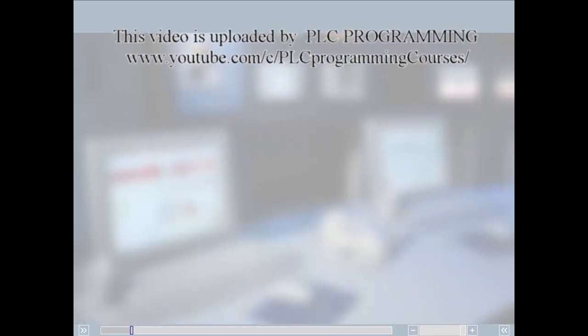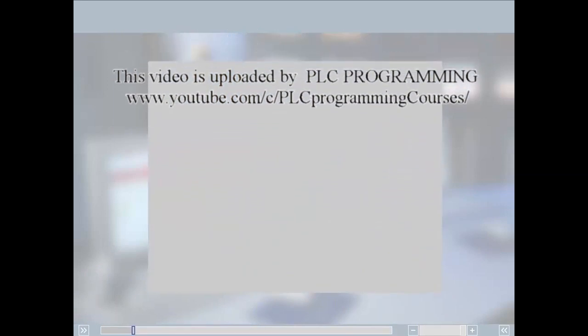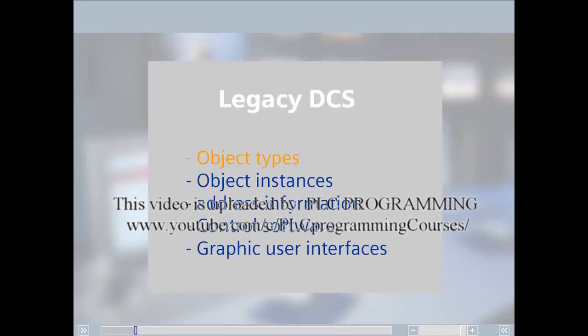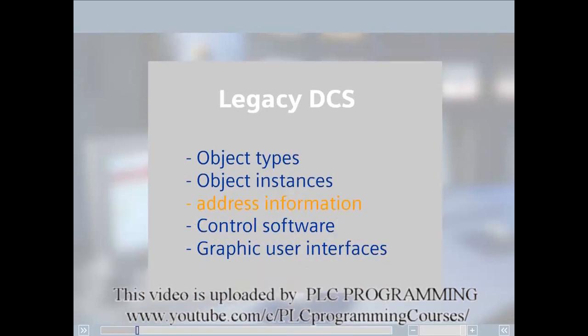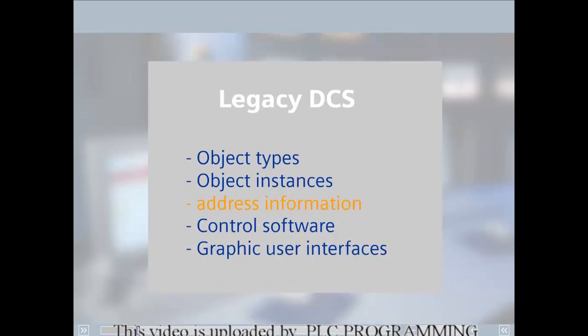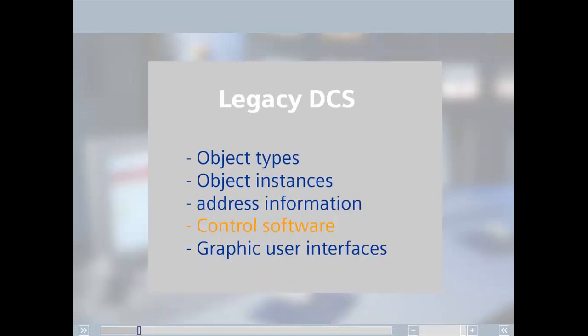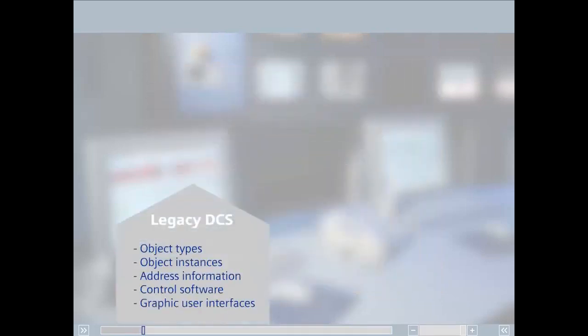In principle, the structure of every process control system is the same. They all have object types, object instances, address information, control software, graphic user interfaces, etc. During a migration, the target system must understand all of this information.